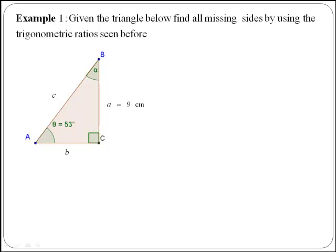Now that you know the main trigonometric ratios, we are going to do an example. The example says, given the triangle below, find all missing sides by using the trigonometric ratios seen before.